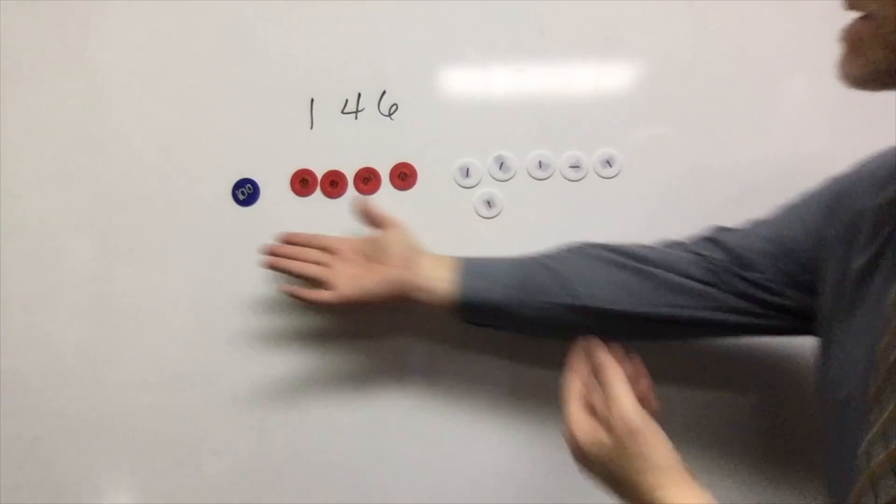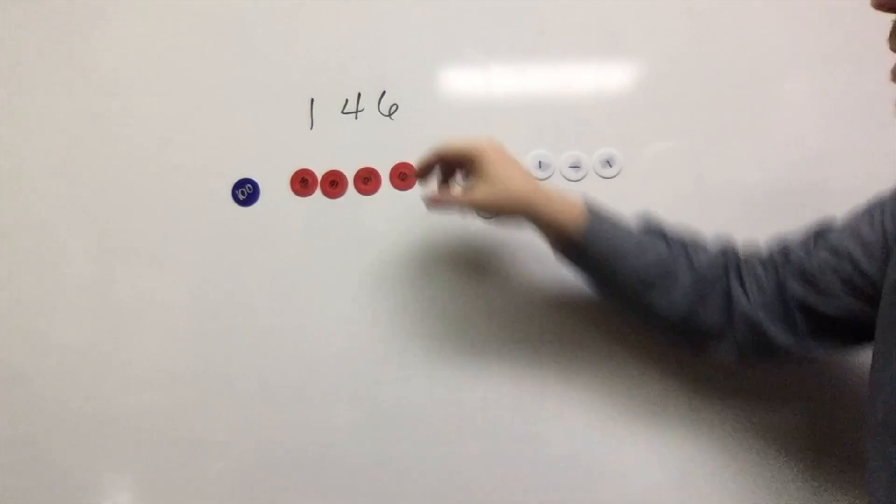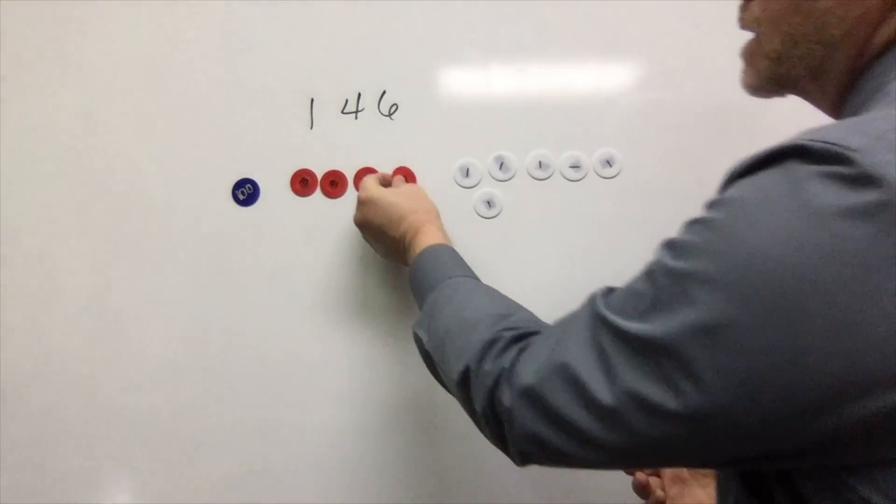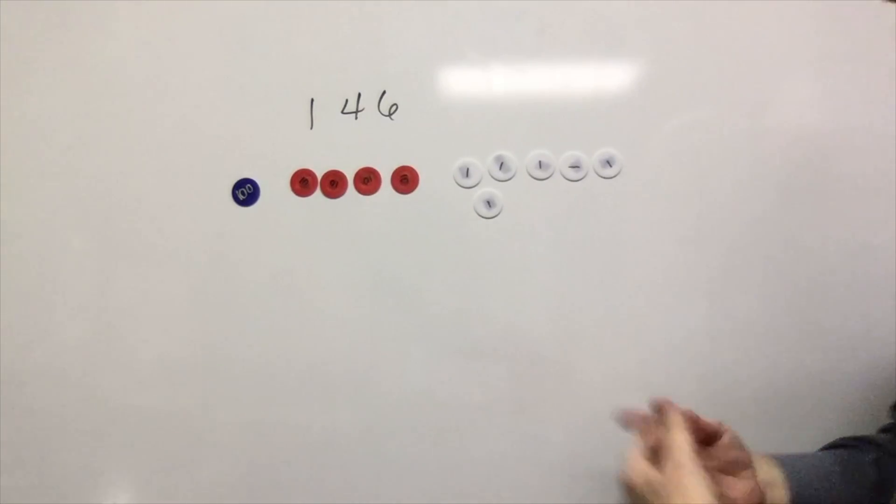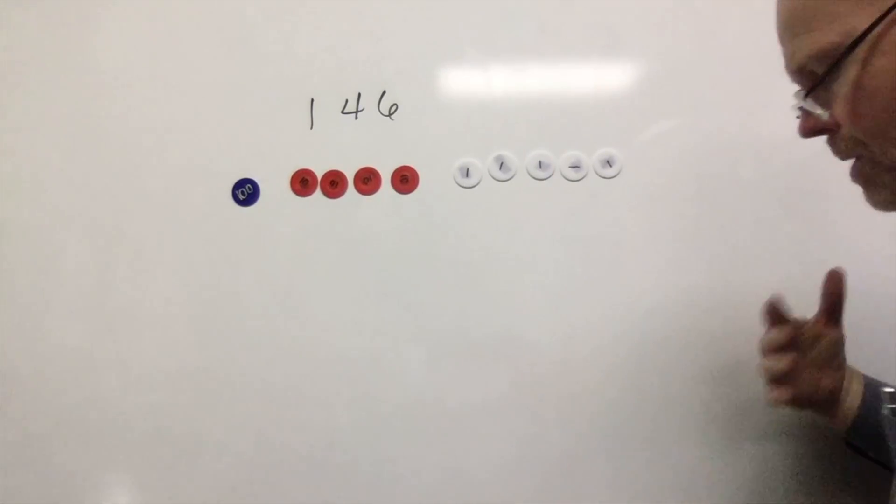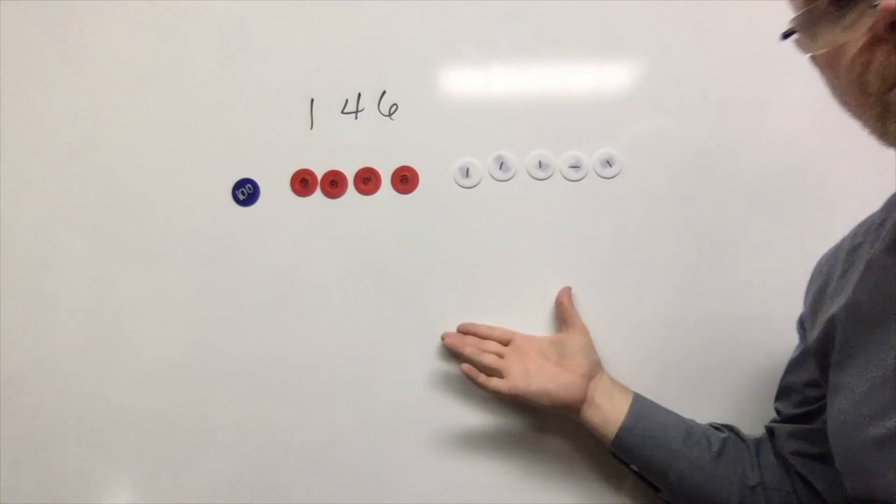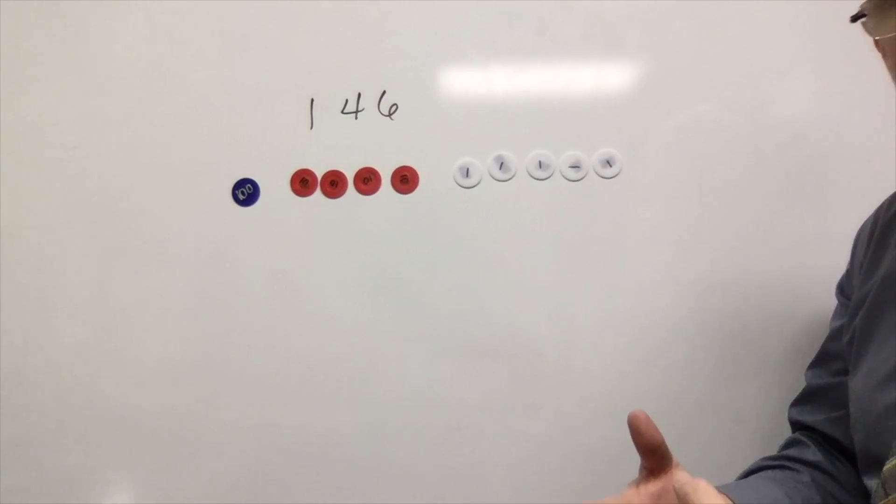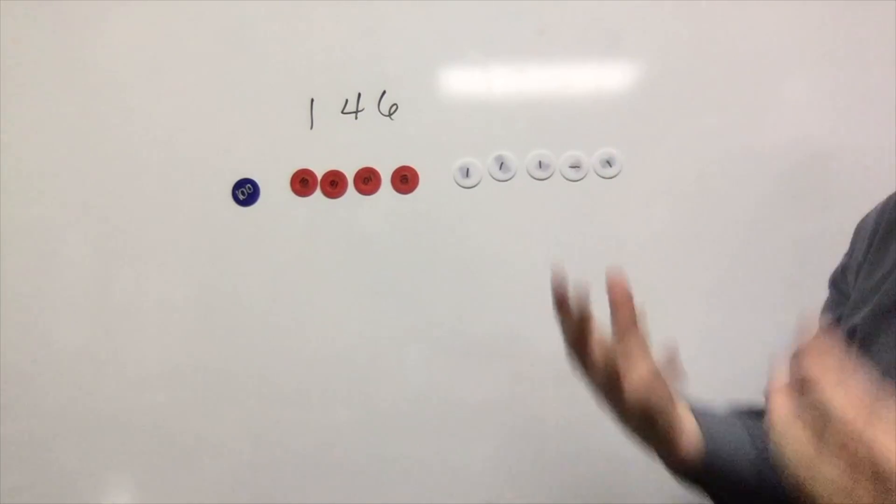We could do ten less. What's ten less than 146? Take one away—it's 145. So it becomes this visual way to really start to see what's going on with place value.